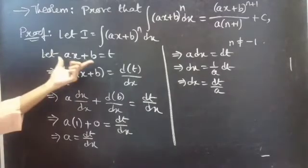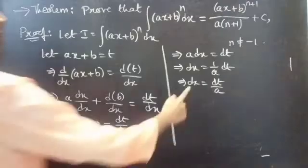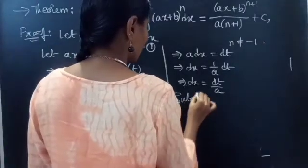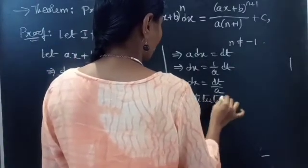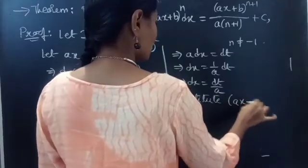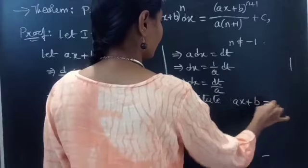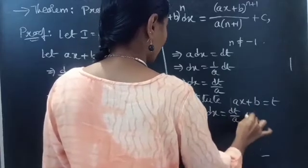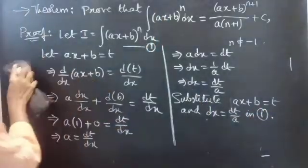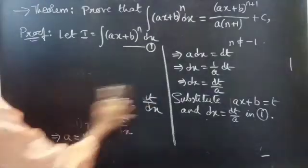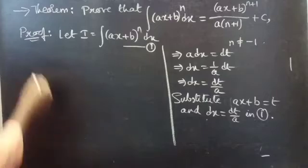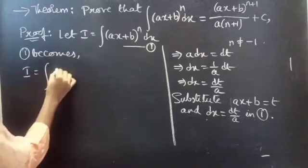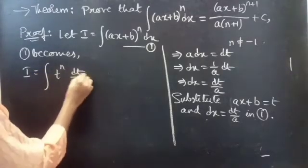Now substituting Ax + b equals t and dx equals dt/A into equation 1. Equation 1 becomes I equals the integral of t^n times dt/A.